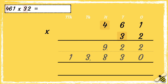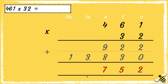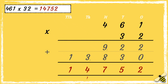The next step is to add the two answers together. 2 add 0 is 2. 2 add 3 is 5. Then 9 add 8 is 17 — we can drop that 1 down into the thousands column. 3 add 1 is 4, and then 1 add nothing is 1. So the answer is fourteen thousand seven hundred and fifty-two.